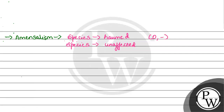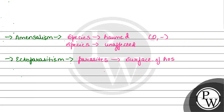Option number B देख लेते हैं which is ectoparasitism. Ectoparasitism जो है, यह क्या होता है? Ectoparasitism आता है हमारा जब हमारी जो parasites हैं वो host की surface पर रहते हैं. Parasites यह surface of host पर present होते हैं, and वहां से यह अपने लिए nourishment gain करते हैं at the expense of host.